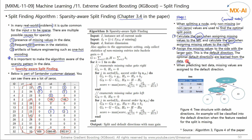For the first split in the tree, the default direction is left. For another split, the default direction is right. In the prediction stage, when predicting test data, missing values in the test data are assigned to the default direction of each node. When we feed the test data into this tree, missing values are assigned to the left in the first split and to the right in the second split. This allows us to predict test data that contains missing values.